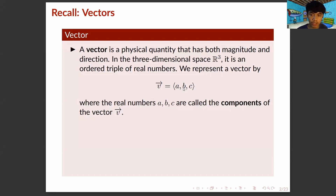In a three-dimensional space, R3, a vector is an ordered triple of real numbers. We represent a vector by vector V, which is equal to (A, B, C), where the real numbers A, B, C are called the components of the vector V.